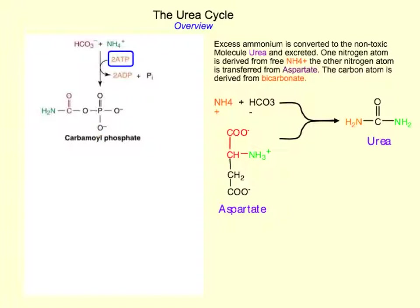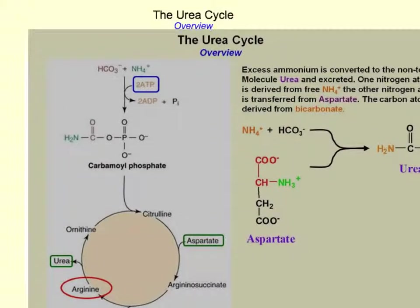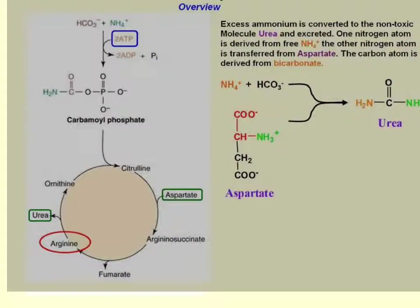If you're going to stop or upregulate the process, you do it right here. Then carbamoyl phosphate is condensed with ornithine to form citrulline, then the second nitrogen is added from aspartate, and you go through the cycle forming arginine in the process and making urea as the end goal.